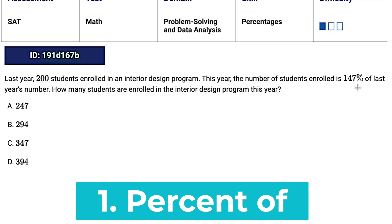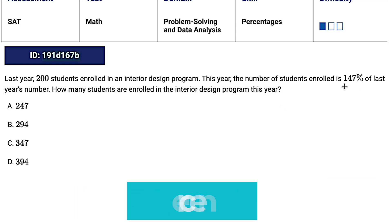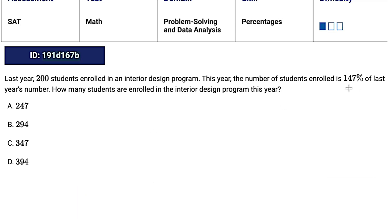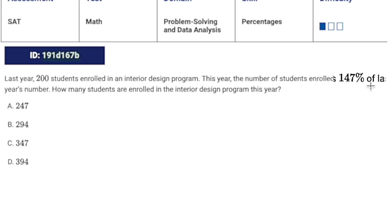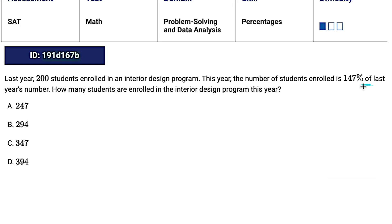So here we see it says: this year the number of students enrolled is 140% of. What you need to remember is 'of' means you multiply. So to get a percent of something, simply multiply by the number form of that percent.